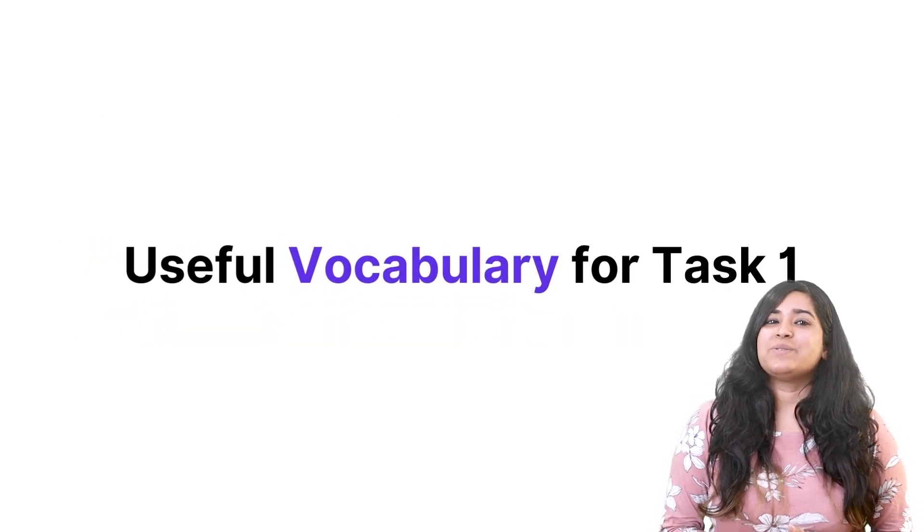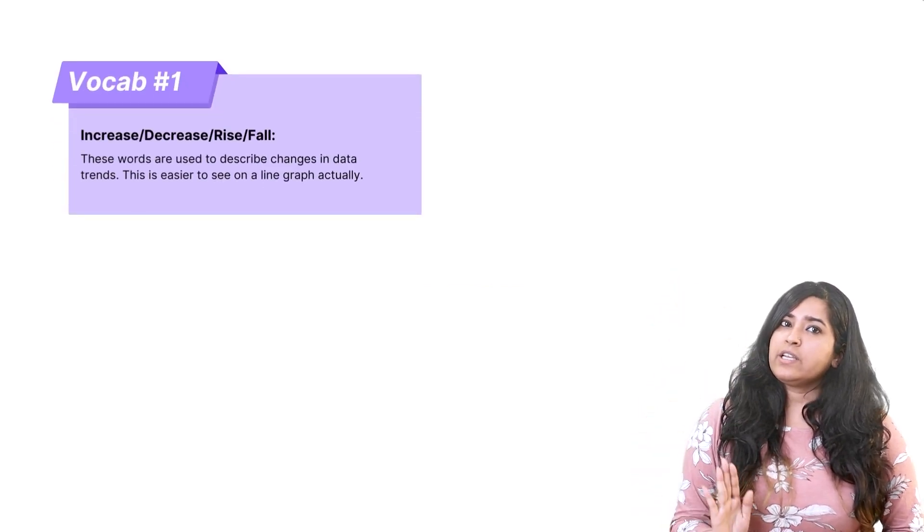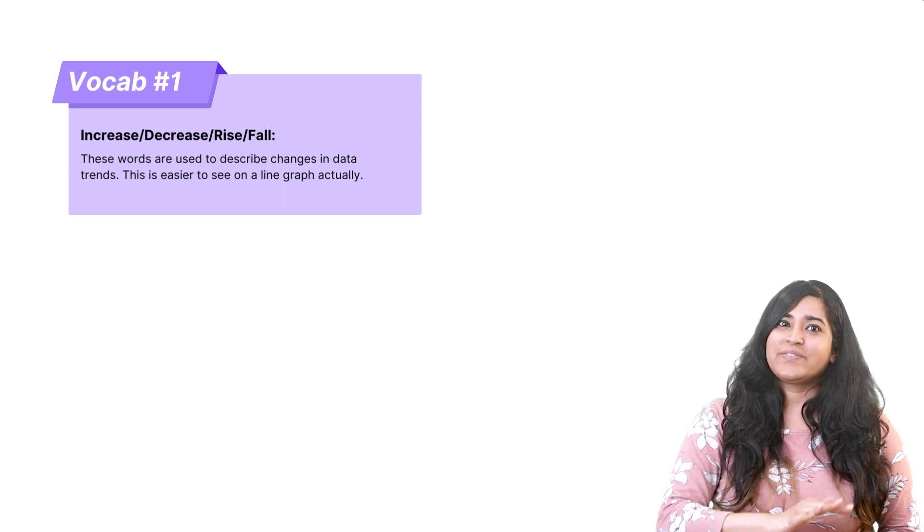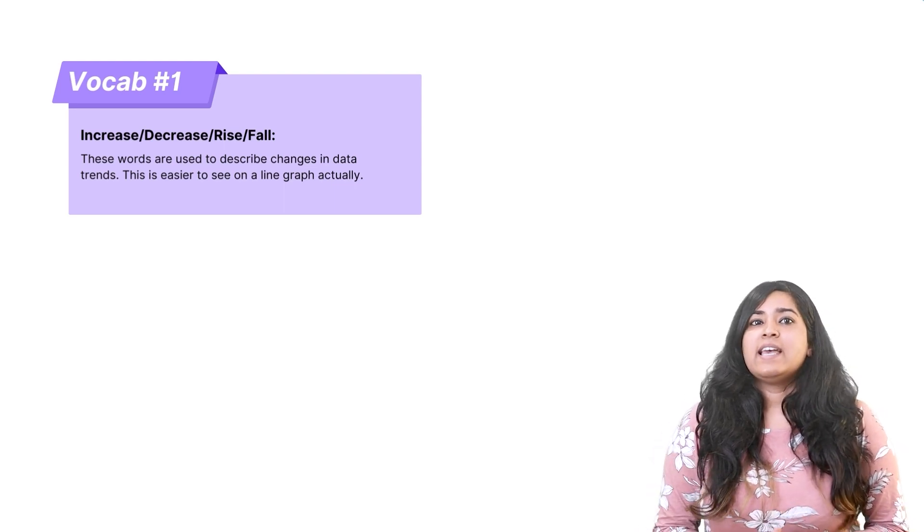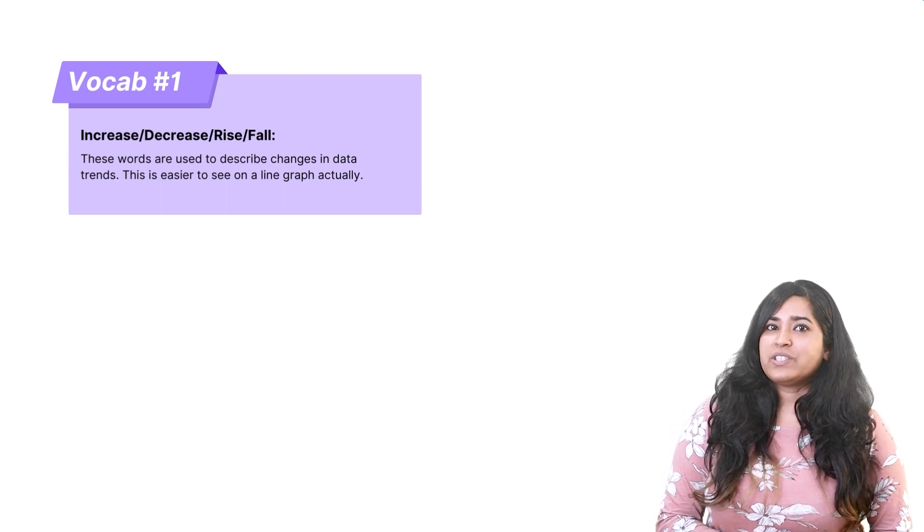Let's start by looking at some useful vocabulary. Useful vocabulary number one: increase, decrease, rise, and fall. These words are used to describe changes in data trends. This is easier to see on a line graph actually.